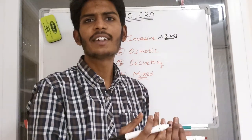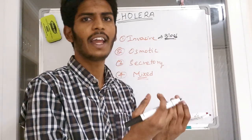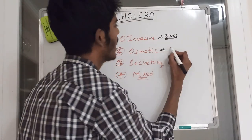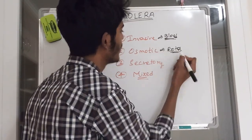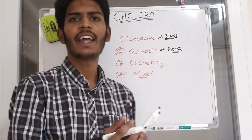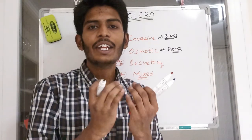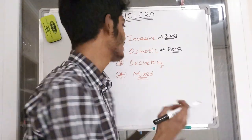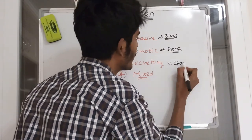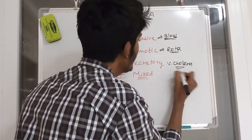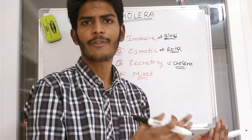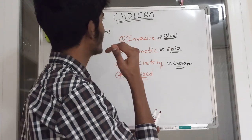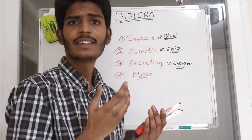Osmotic diarrhea — the word itself says osmosis is causing the diarrhea. An example is rotaviral infection. In secretory diarrhea, water and electrolytes are secreted into the lumen, and Vibrio cholerae causes secretory diarrhea. Mixed type is a combination of any of the above. So the type of diarrhea in Vibrio cholerae is secretory diarrhea.